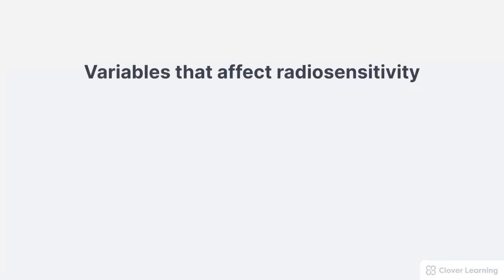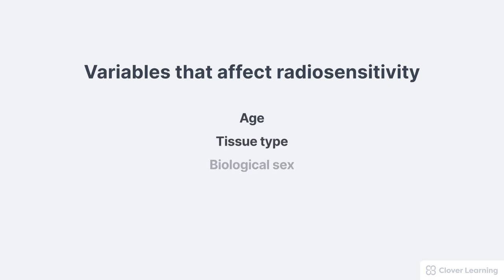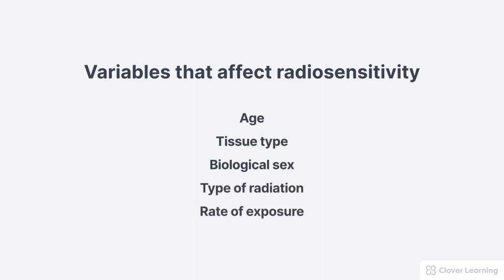When considering a whole person, there are several variables that affect a person's response or sensitivity to ionizing radiation, including the person's age, the tissue type being exposed, their biological sex, the radiation type, and the rate of exposure.